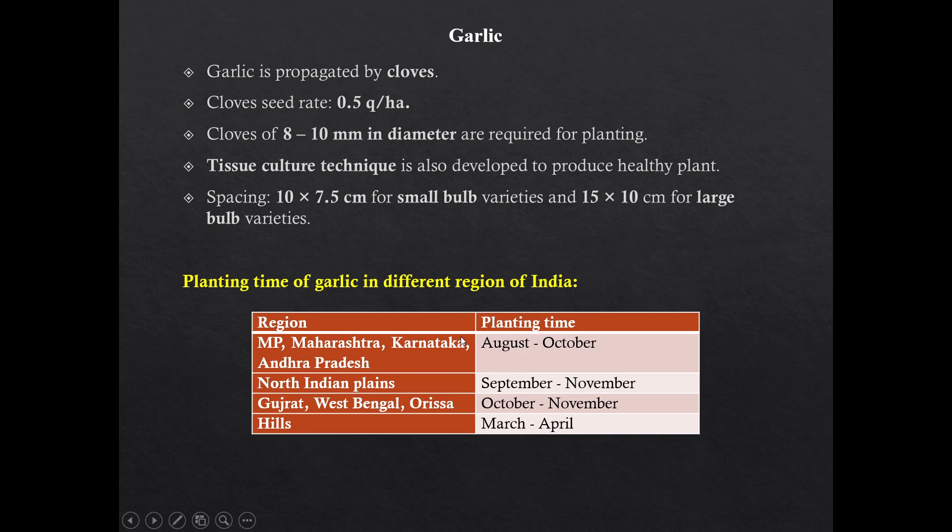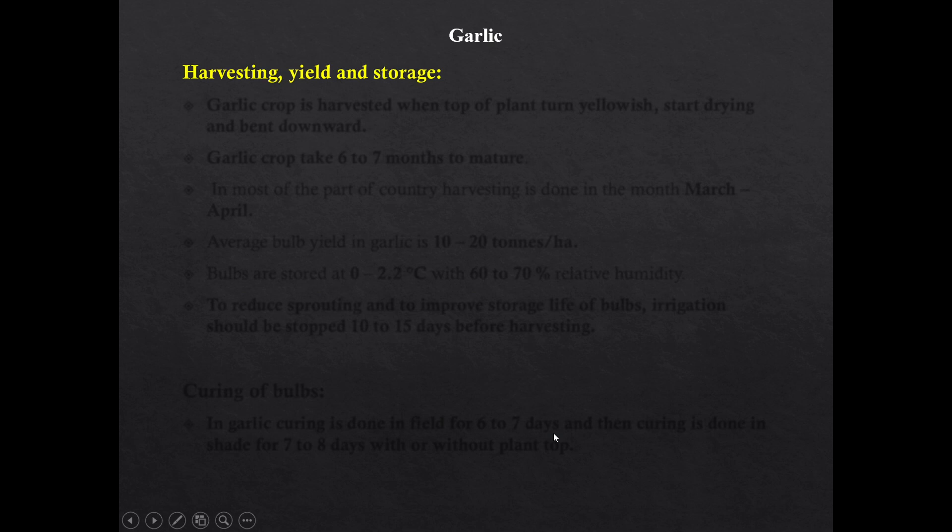Planting time of garlic in different regions of India: In MP, Maharashtra, Karnataka, and Andhra Pradesh, planting is done in August-October. In North Indian Plains, September to November is the planting time. In Gujarat, West Bengal, and Orissa, planting is done in October-November. In hills, planting is done in summer months.